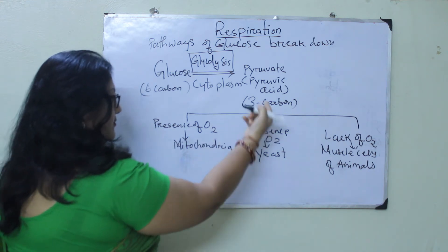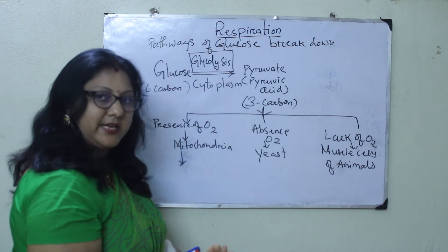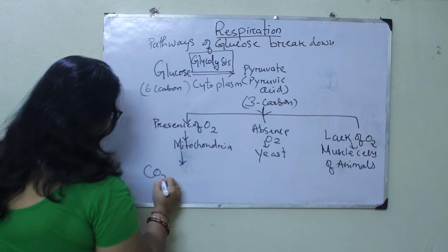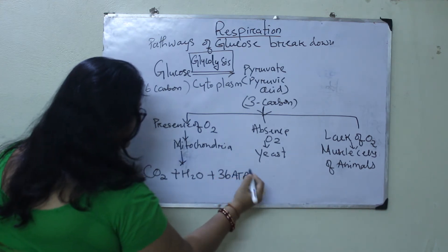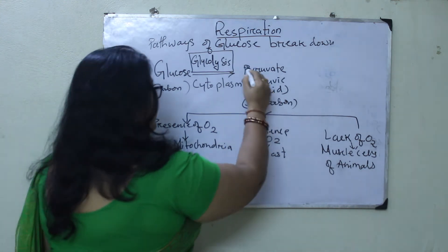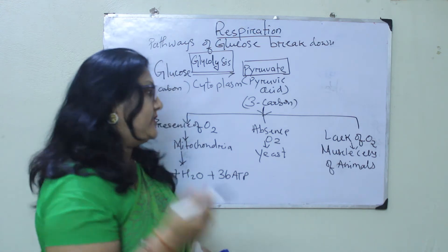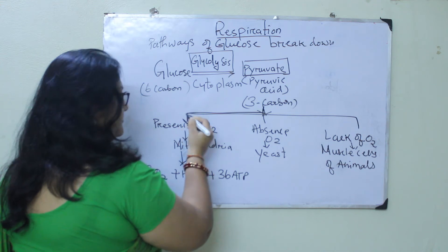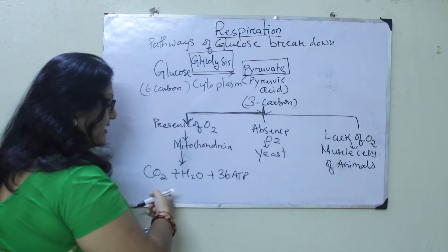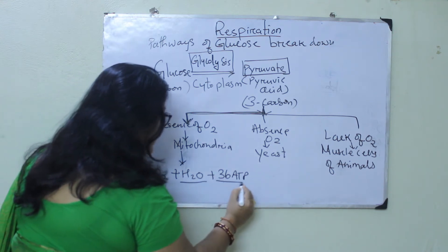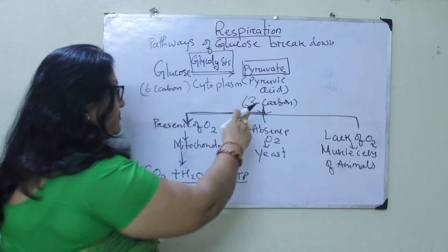In the presence of oxygen, pyruvic acid enters into the mitochondria and through many different biochemical reactions produces the final products: carbon dioxide, water molecule, and 36 molecules of ATP. So if oxygen is available, pyruvate follows this aerobic pathway and ends up in the mitochondria, with CO₂, water, and 36 ATP as end products.